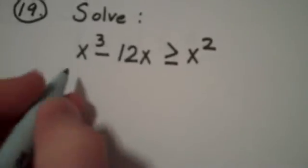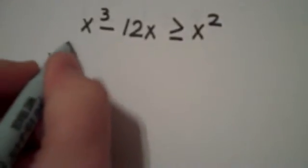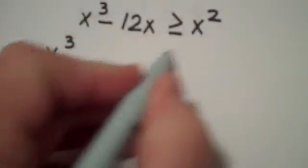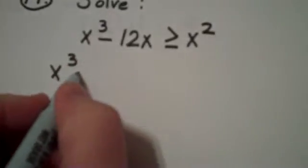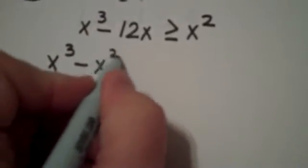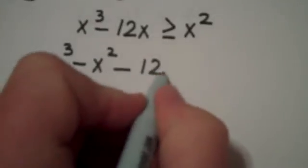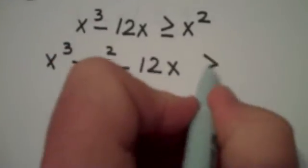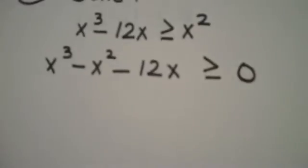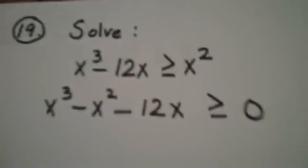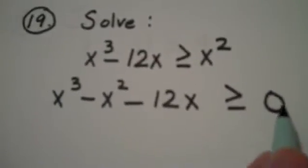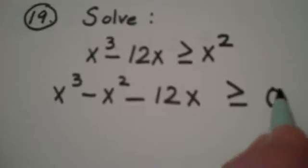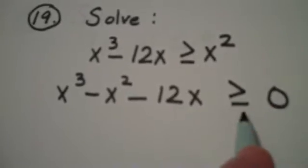And the first step in that method is to write the inequality in such a form. I'm going to have a minus x squared here and of course the minus 12x. So one of the first things that I do by hand is I establish 0 on the right-hand side of the inequality.